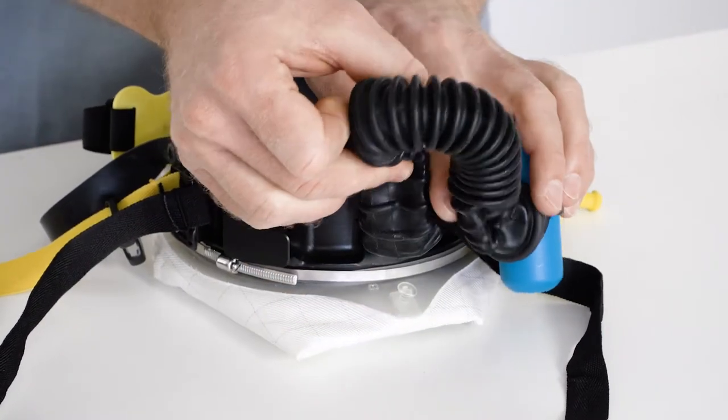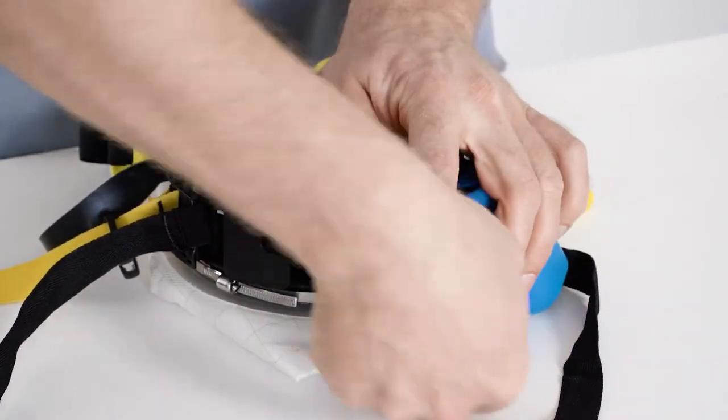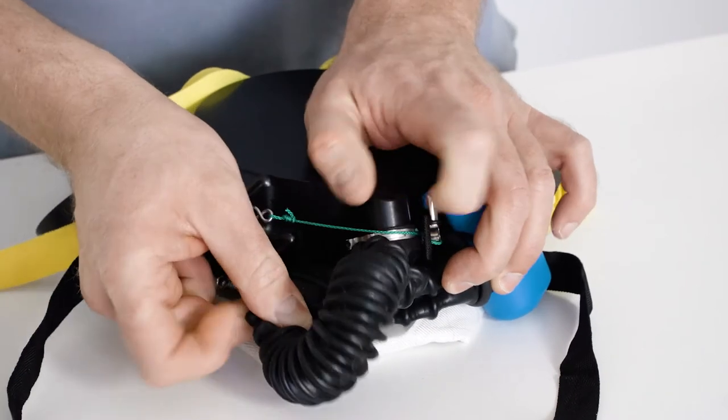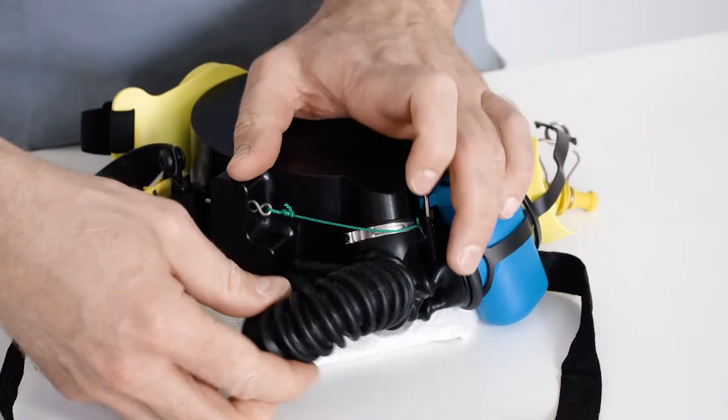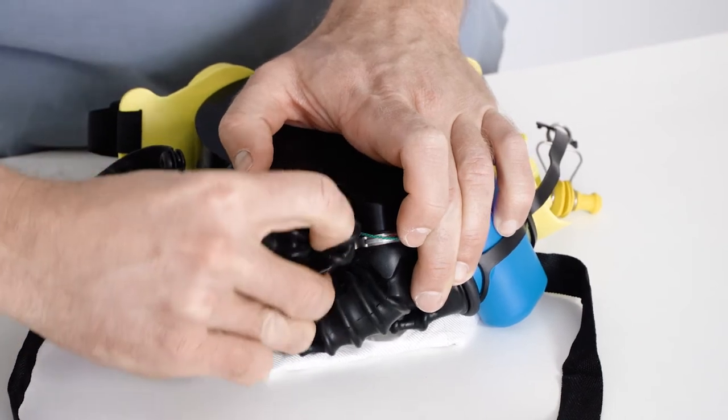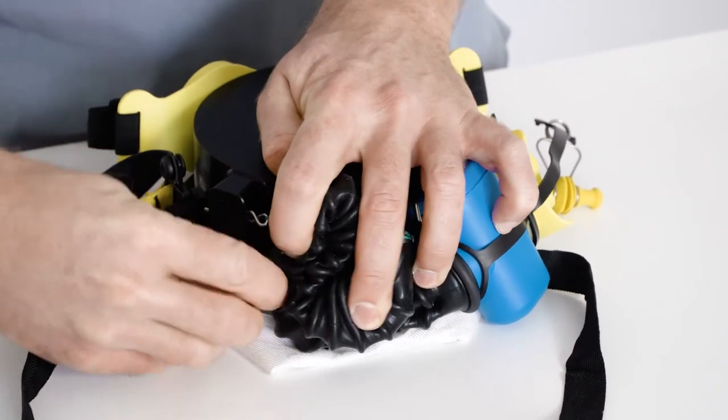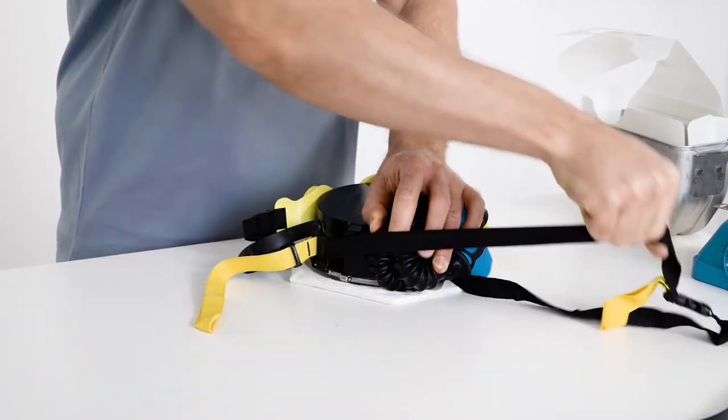Twist the breathing hose in and clamp it between the connector and the breathing bag. Spread out the neck strap.